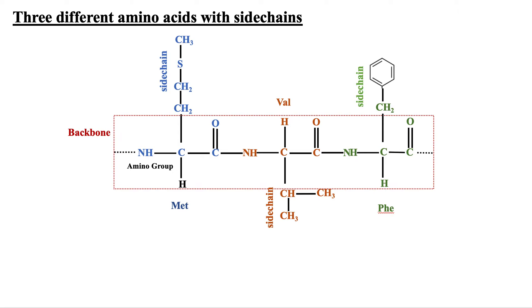This is another representation showing the attachment of three different amino acids along with their side chains. One interesting thing in this figure is that we can see the repeating units of NH-CH-C=O. We have this repeating unit of NH-CH-C=O in a polypeptide chain, and we call it the backbone.